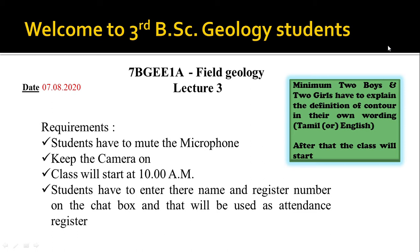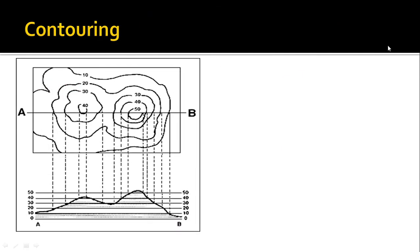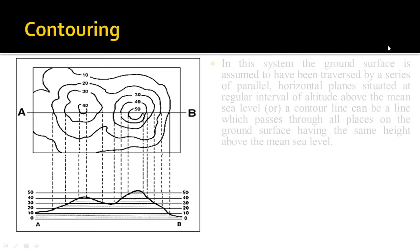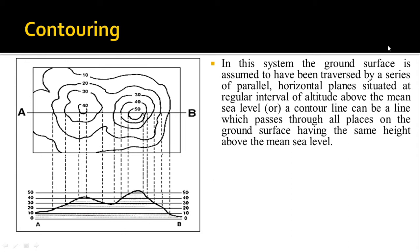Good morning students. This is the third lecture in field geology and the topic is contouring. A contour is a system where the ground surface is assumed to have been traversed by a series of parallel horizontal planes situated at a regular interval of altitude above the main sea level.